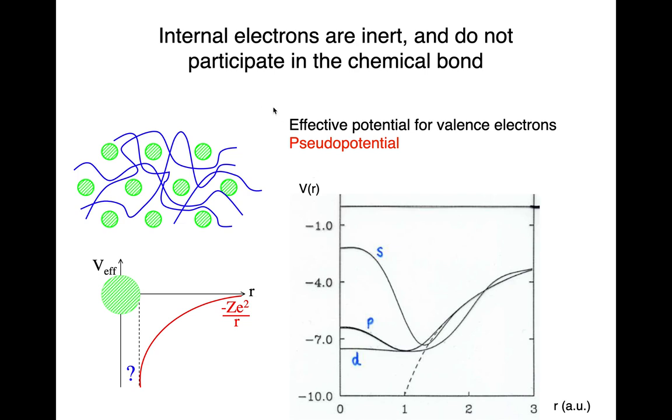In a nutshell, we're going to ask the question, if the core electrons are inert, why don't we get rid of them and focus only on the valence electrons and try to ask what is the effective potential for the valence electrons when we extract out the core electrons.